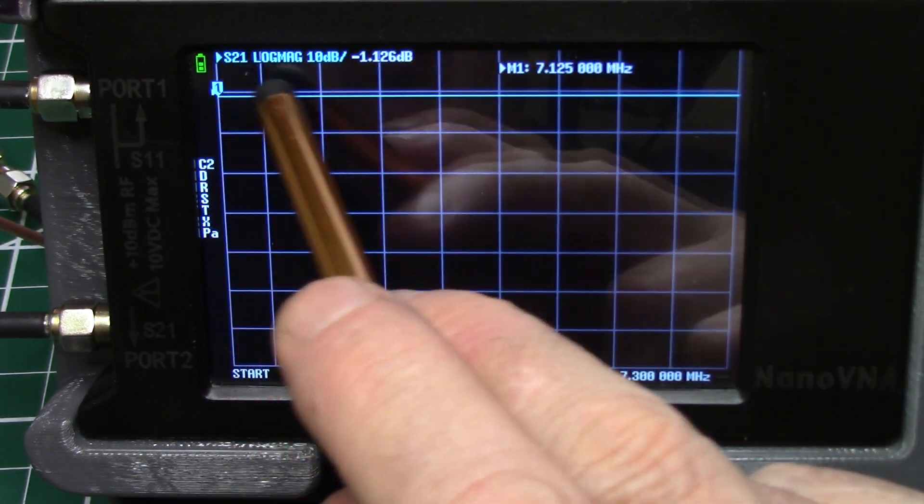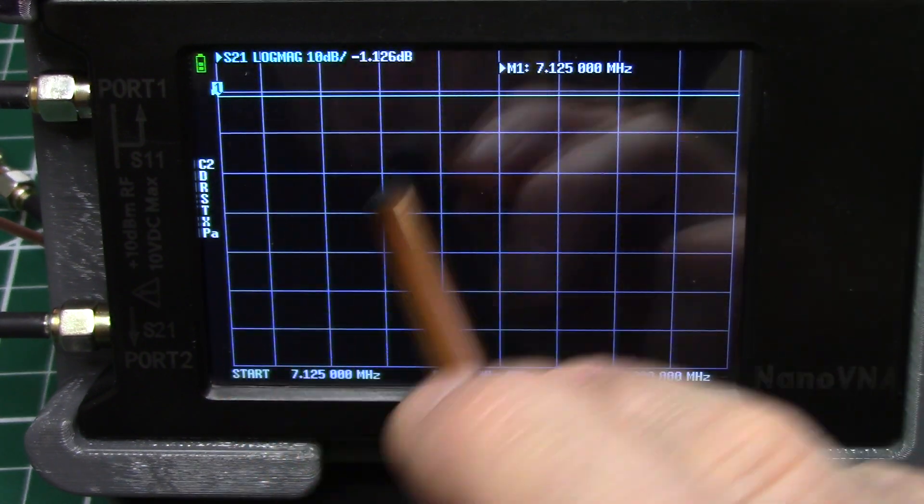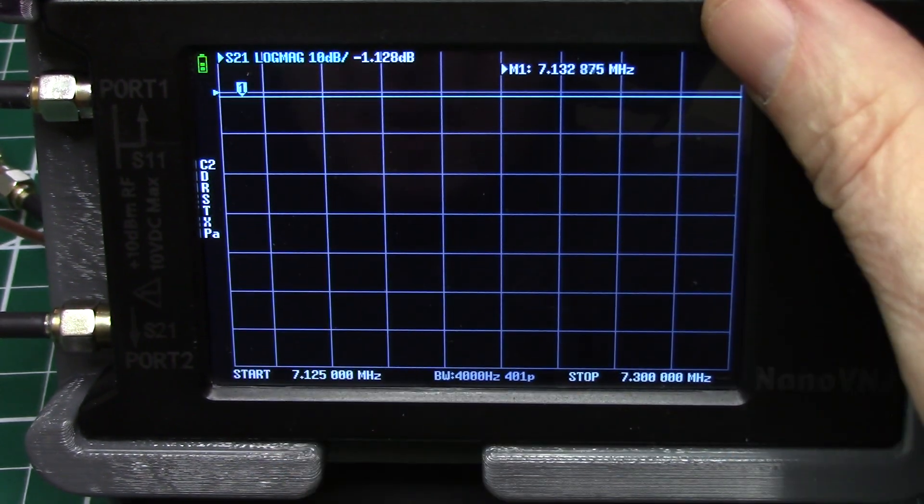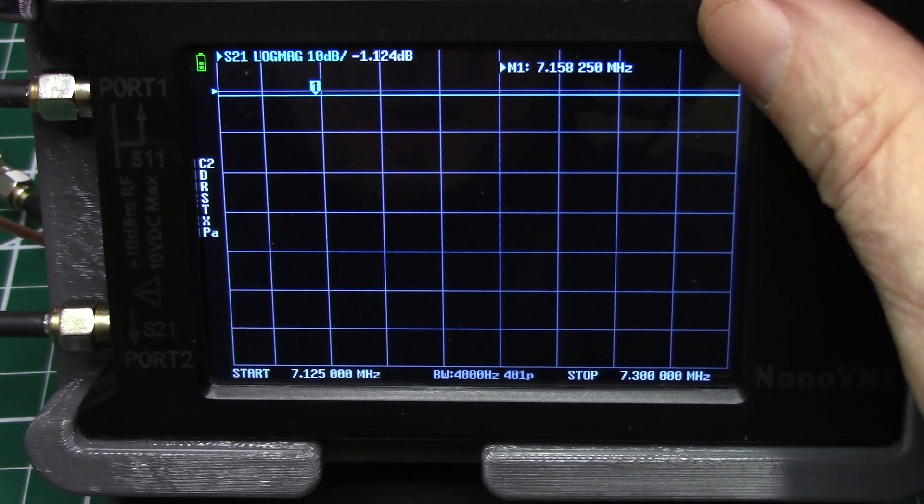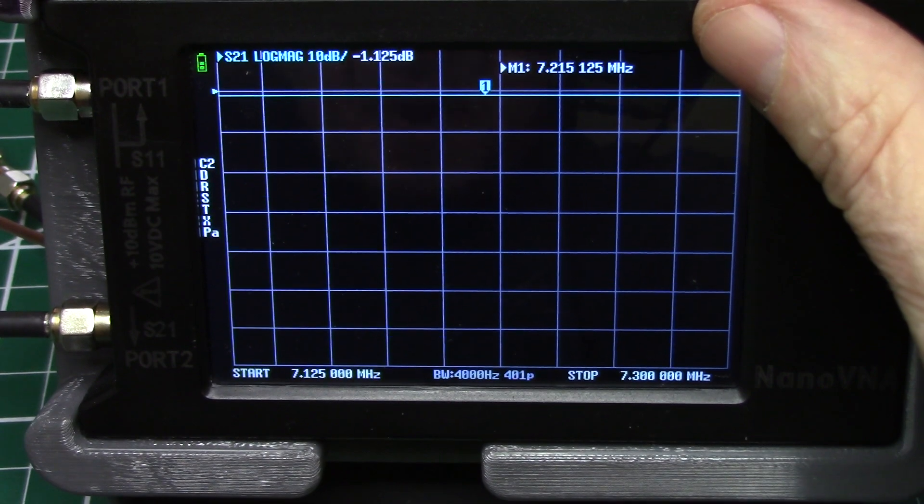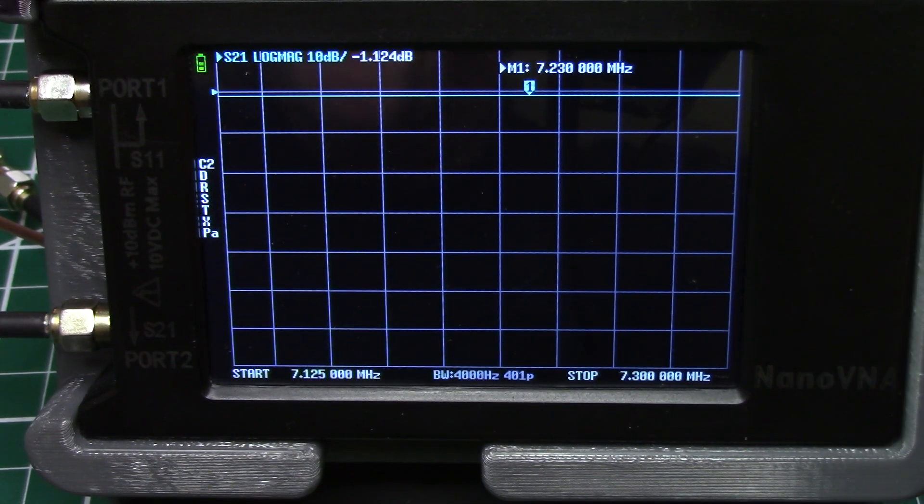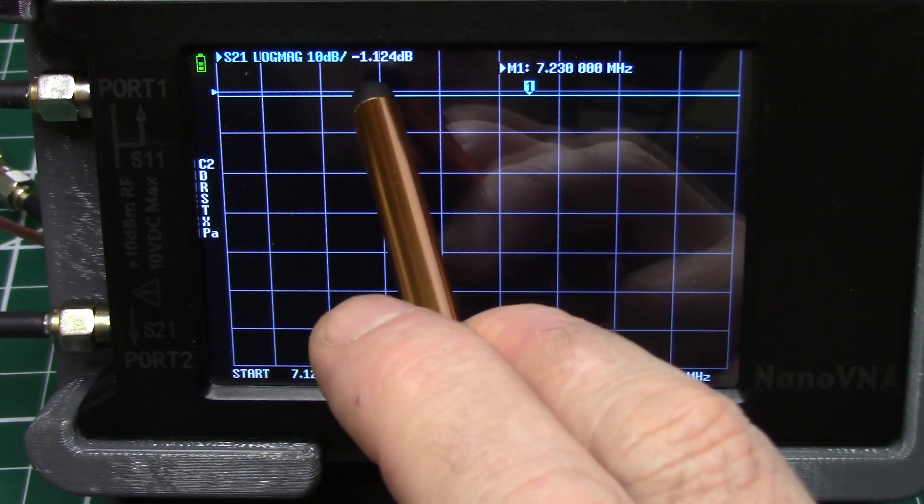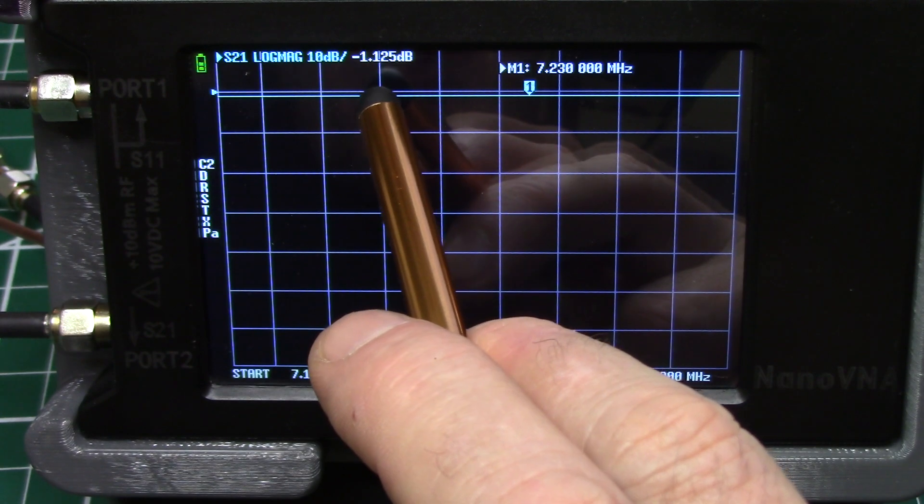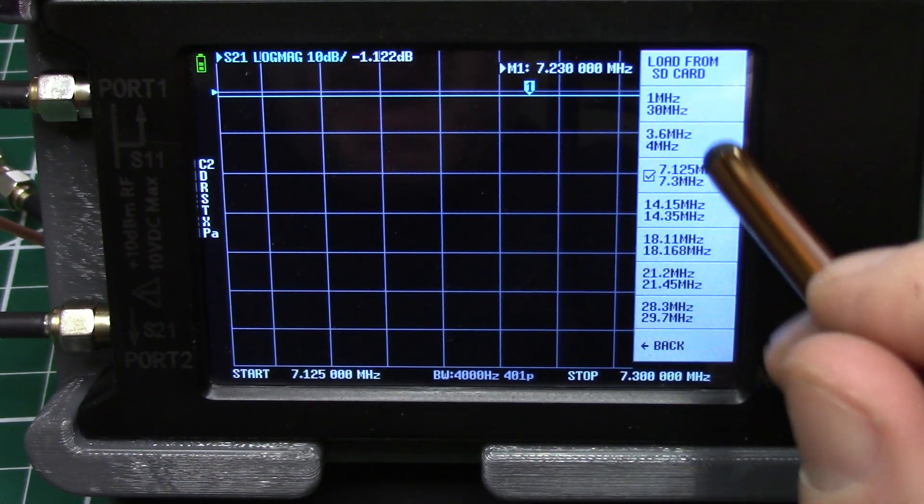So let's look at 7 megahertz. And here we've got S21 log mag. I believe it changed colors but not a problem, that's just how this one is stored. And we can move this up. I've got the entire 40 meter band here. Let's move this up to 7.23. Okay I've got this moved up to 7.230 and you can see we've got a loss through both of these transformers, a negative 1.12. You do the same measurements on each of the bands.